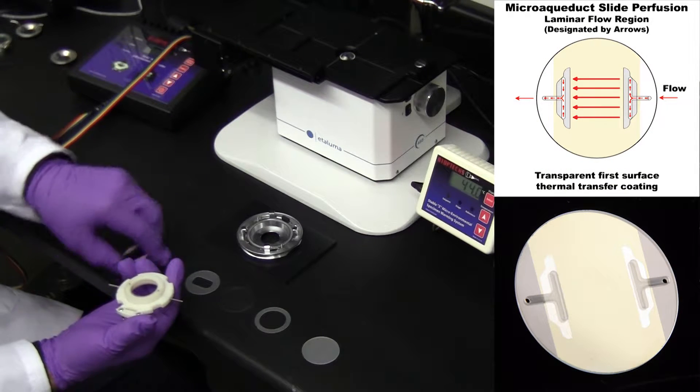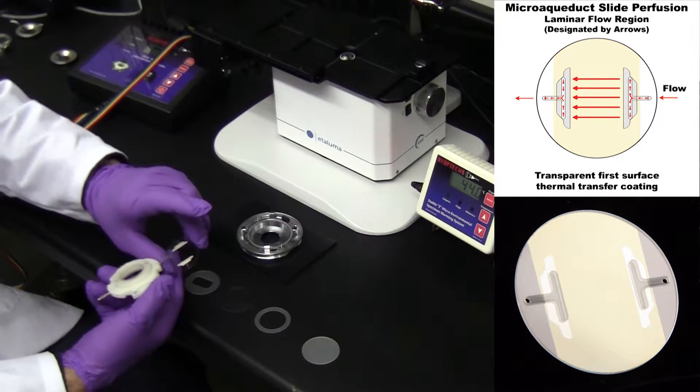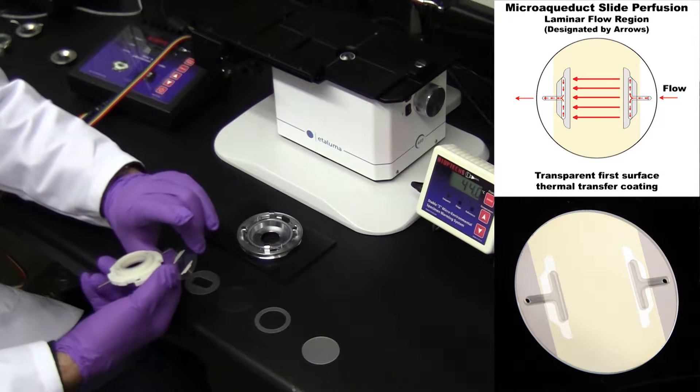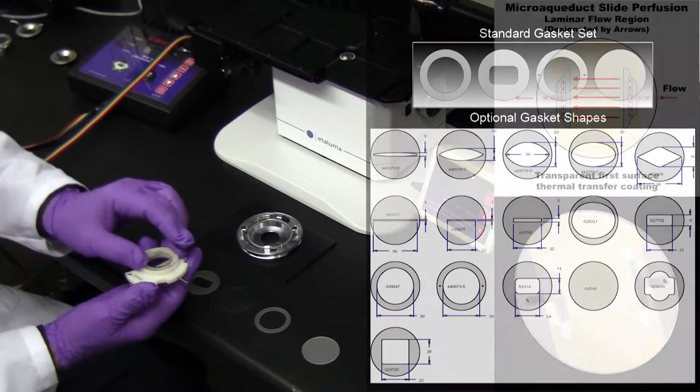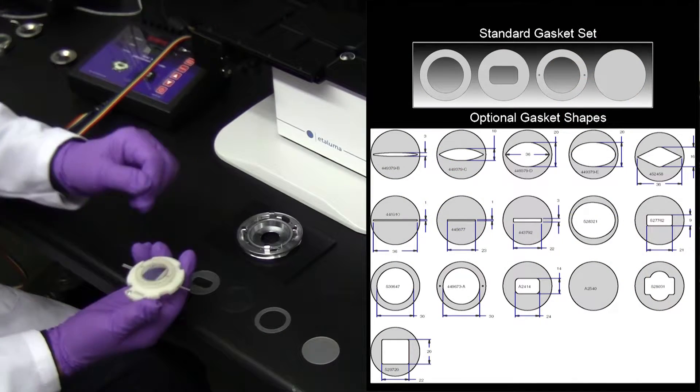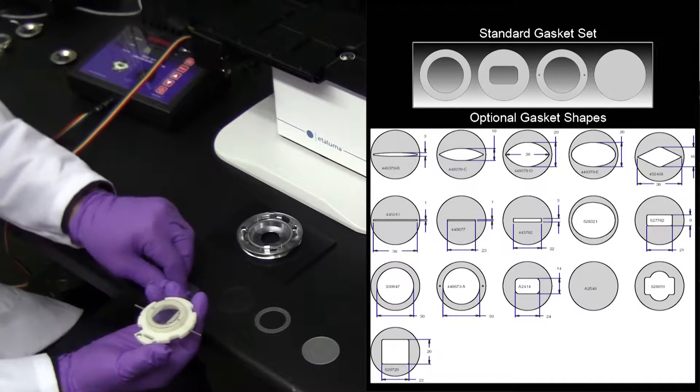The next component is a microfluidic slide, the heart of the FCS2. It is a combination of an optical surface, temperature control component, and microfluidic guide, having perfusion grooves to allow media to pass through the optical cavity.